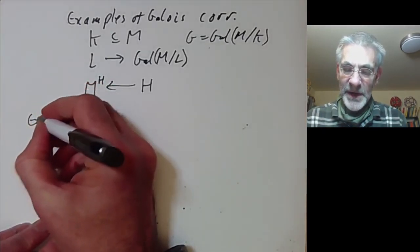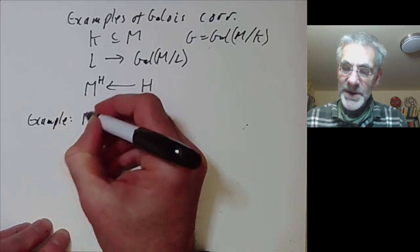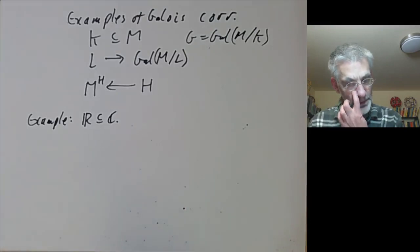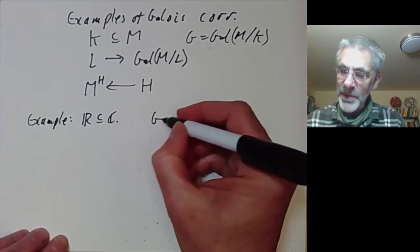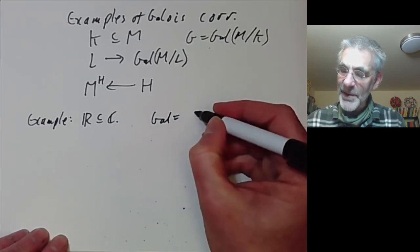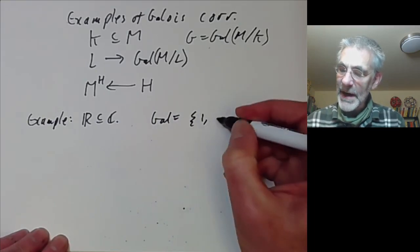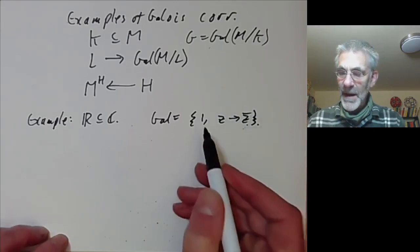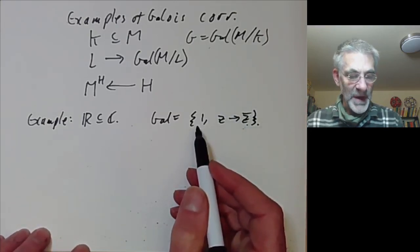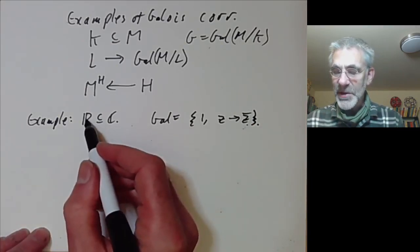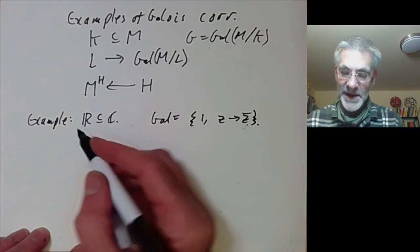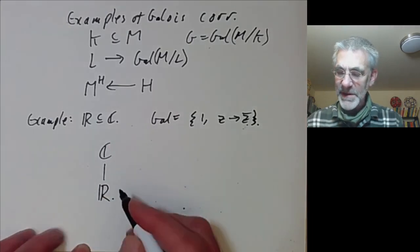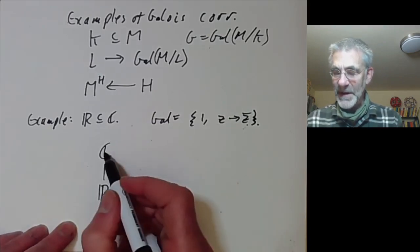Let's start off with a trivial example just to warm up. Here we take the reals contained in the complex numbers. The Galois group just has two elements: the identity and complex conjugation. There are two subgroups and two subfields of ℂ containing ℝ, namely the complex numbers themselves and the real numbers, which correspond to the following subgroups.